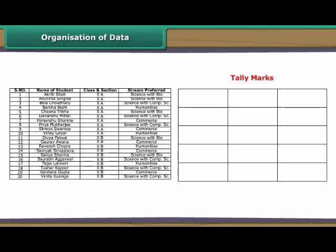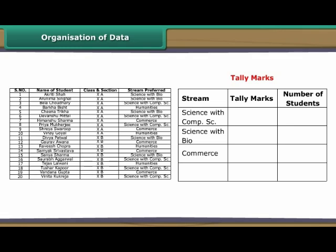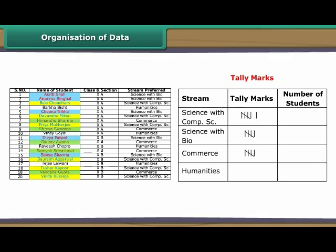We use tally marks to organize data. Consider the data collected by Sheetal on the stream preferences of class 10 students. Make three columns: streams, tally marks and number of students. Specify all available streams under streams one by one. Under tally marks, denote a student with a preference for a particular stream by a tally mark against that stream. Indicate every fifth student by a slanting line crossing the previous four tally marks. Now count the tally marks against every stream and record it under number of students.